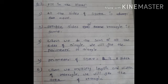Third one, when we do the sum of all the sides of triangle, we will get the dash of triangle. Agar hum triangle ki sab side ka addition karte hain, to triangle ka hamein kya milega, dash milega, kya hoga? So the answer is perimeter.